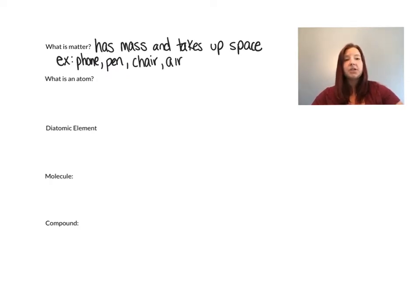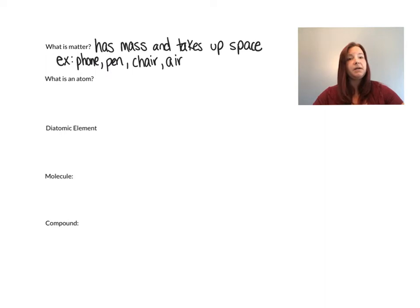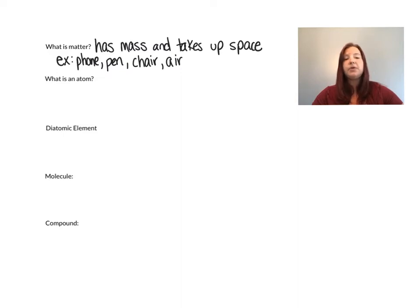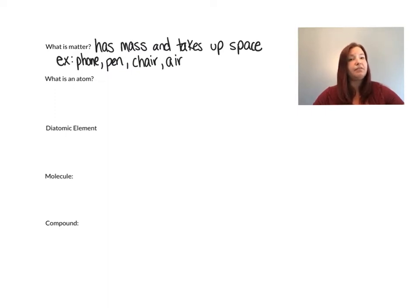Matter actually comes in five different states. Solids, liquids, and gases you've probably heard of. Plasma is the fourth natural state. And then there's actually a man-made state called Bose-Einstein condensates, which was discovered in 1995.